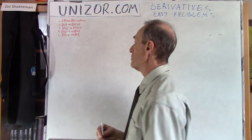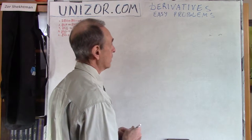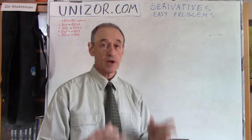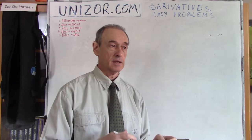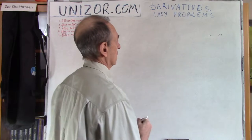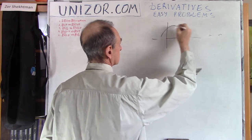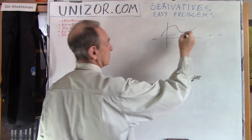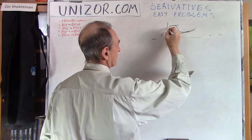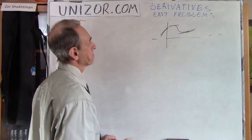Today we will talk about a few theorems related to derivatives. The first one is very short: if the function is differentiable, then it's continuous. Differentiable, graphically, means that if you have a certain function, there is a tangential line at every point wherever this function is defined.